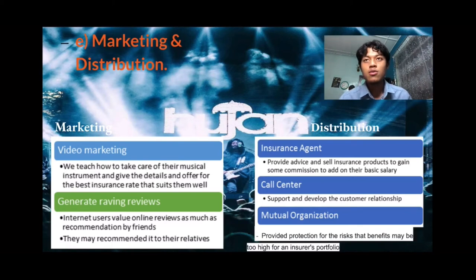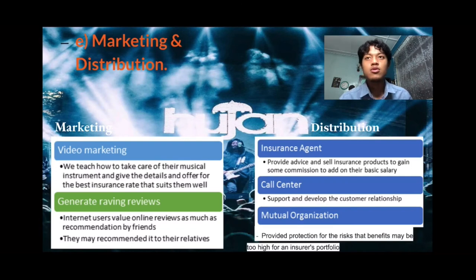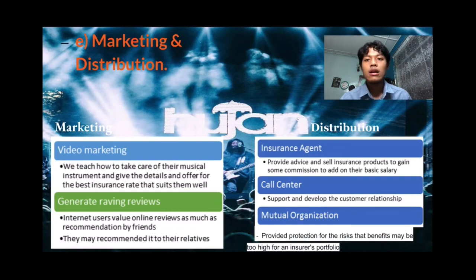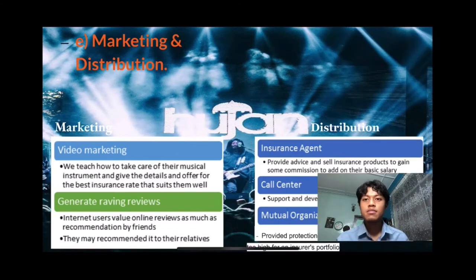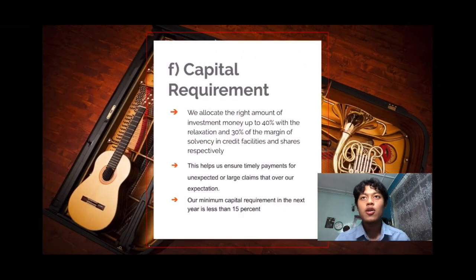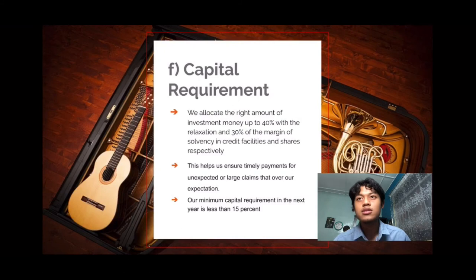For distribution, we distribute our product through insurance agents who provide advice and sell insurance products to earn some commission on top of their basic salary. We also distribute through a call center that supports and develops customer relationships. Finally, through a mutual organization that provides protection for risks where benefits may be too high for an insurance portfolio. For capital requirements, we allocate the right amount of investment money up to 40%, with 30% margin of solvency in credit facilities and shares respectively.